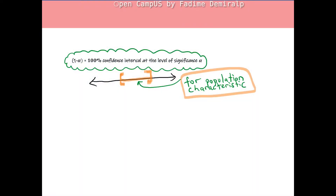Hi there! The confidence interval for a regression coefficient, either for beta naught or beta 1, is constructed similarly to the one for the population mean we discussed in the Chapter 3 confidence interval video, whose link can be found on the right top corner. There, the population characteristic was the population mean mu.